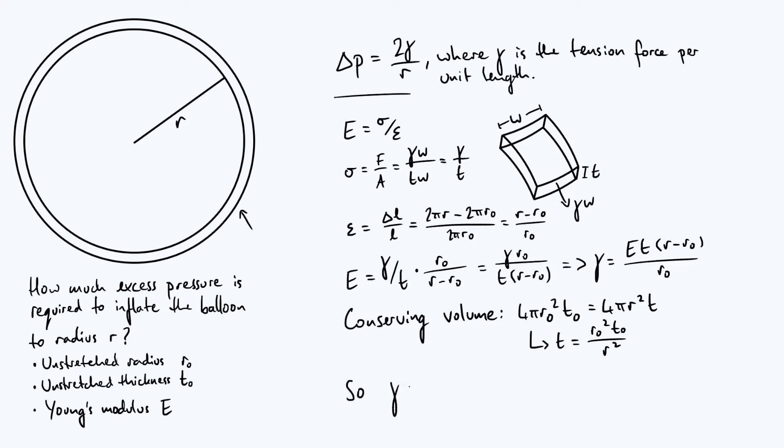Then we're just going to sub that T back into our expression for γ and simplify. So we're going to conclude that γ is equal to E, and then we get r₀²T₀ in place of that T, still got our (r - r₀) factor. On the bottom you have now an r² from that T expression. You've still got your r₀. Then you can cancel down one of the r₀'s and get Er₀T₀(r - r₀)/r².